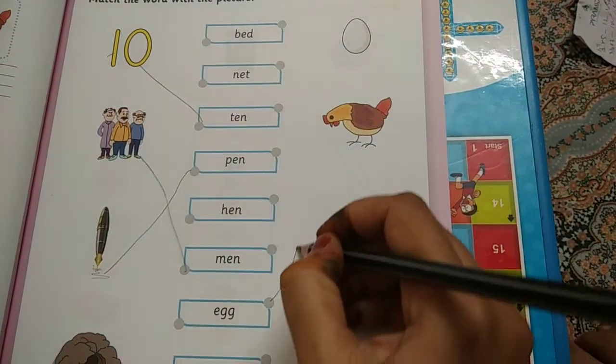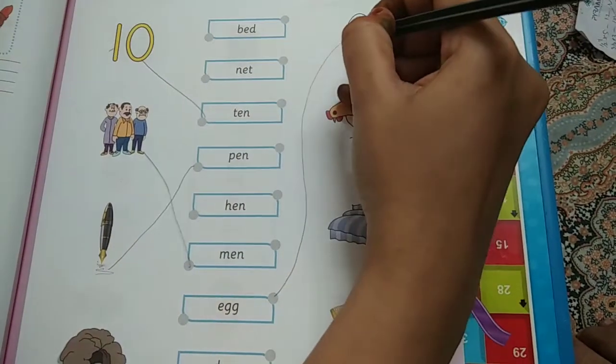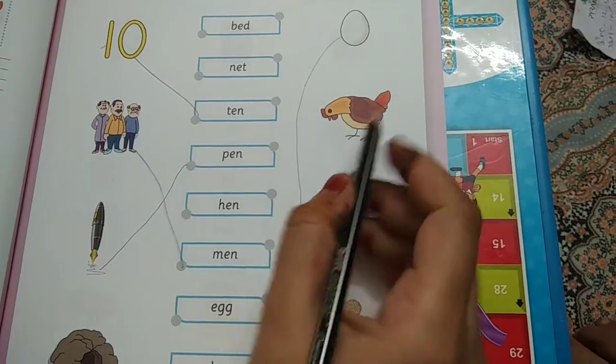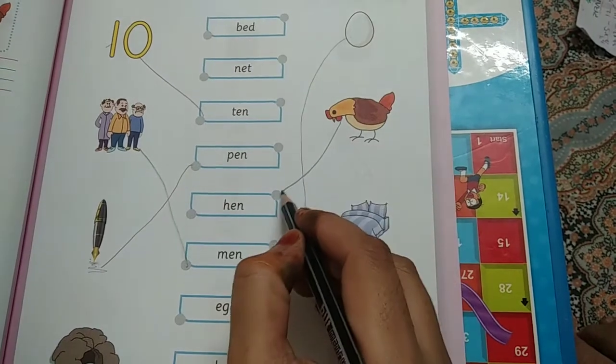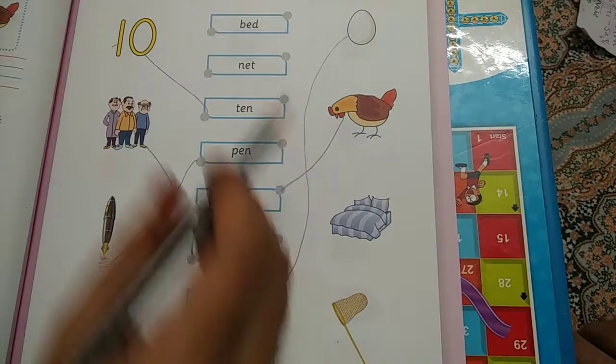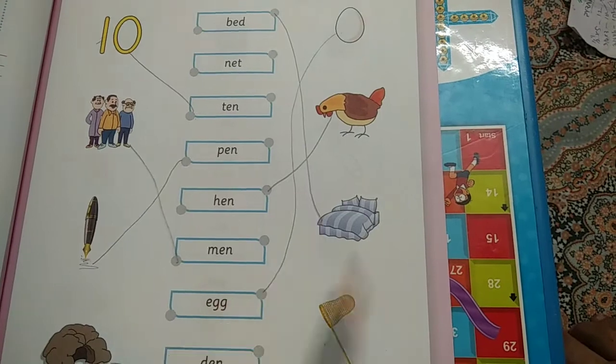This is egg. And egg is E-G-G. So you will go from here direct to egg. This is hen. Again hen. Bed. It's here. So you will come down. Bed.